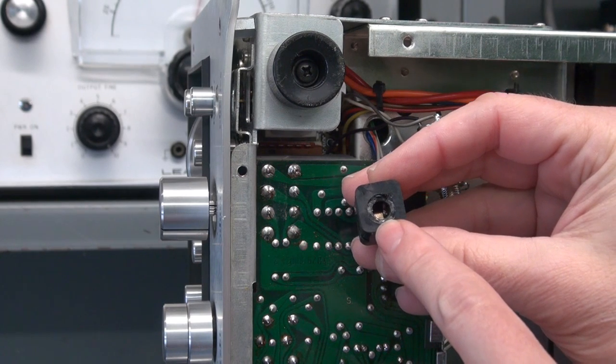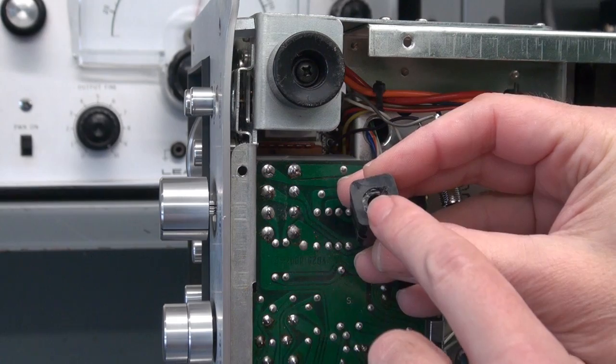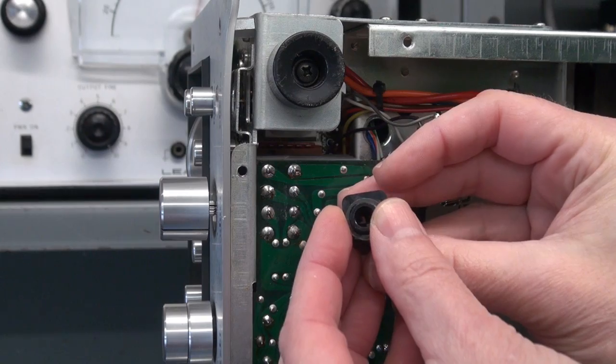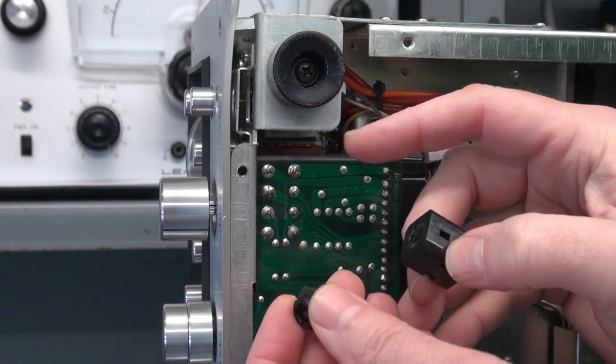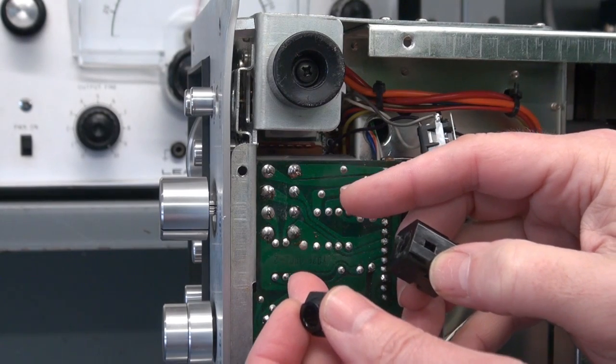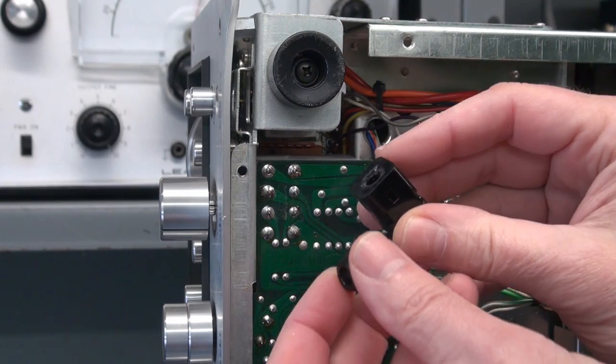If you take a look where the shaft comes out on this old jack assembly, it's offset. The threads were not at center, and the hole that goes into the chassis also has that same offset cutout. If you try to put in a standard jack, it'll jam up.